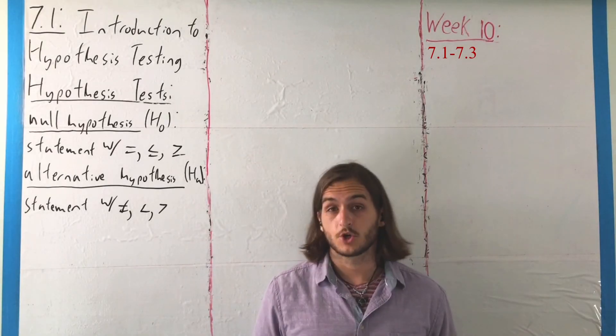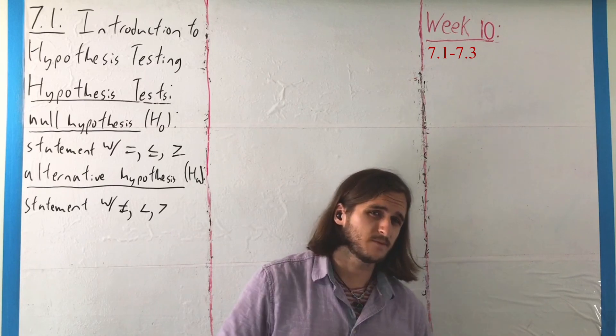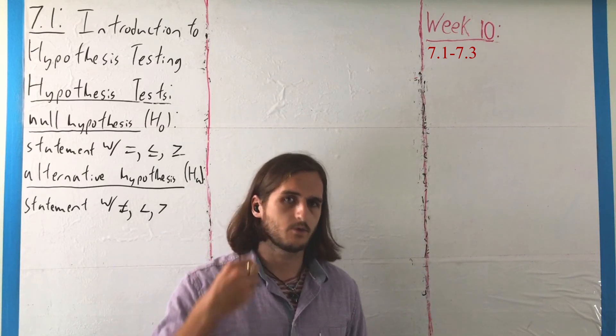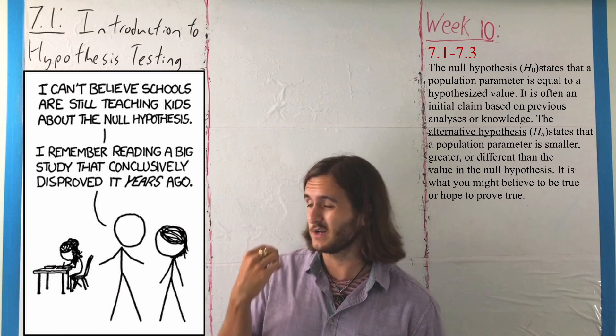The first things we're going to look at here in terms of hypothesis tests are our two basic units around which we build the whole process: the null and alternative hypothesis.